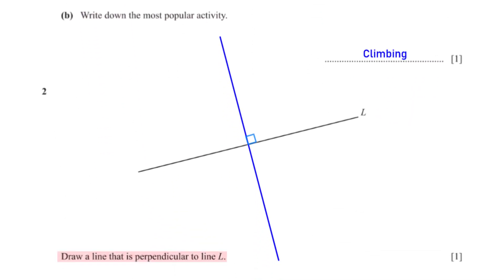Draw a line that is perpendicular to line L. There are many ways we can go about this. We can either use a protractor to measure an angle of 90 degrees at any point on line L and draw a line through the 90-degree mark, or we can use a pair of compasses and draw the perpendicular bisector of line L.